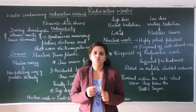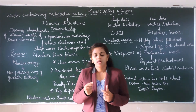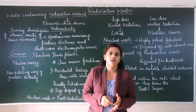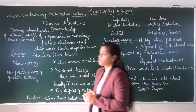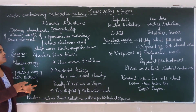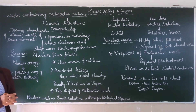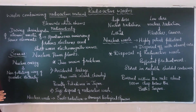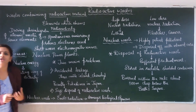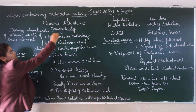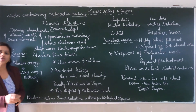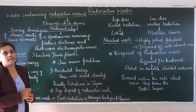We have understood solid waste management and agrochemical waste and their effects. Now let us understand what is meant by radioactive waste. Wastes that contain radioactive materials are called radioactive waste. The elements which show radioactivity are radioactive materials.